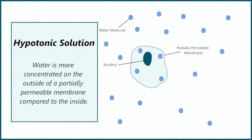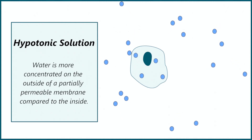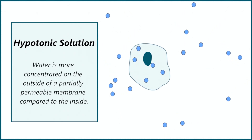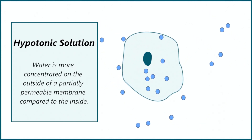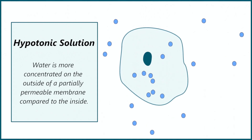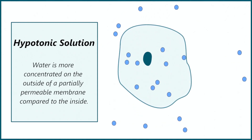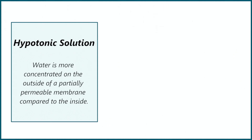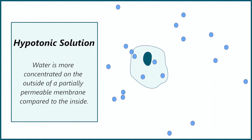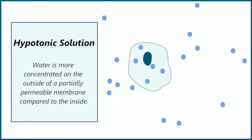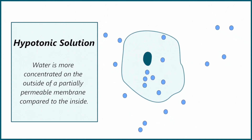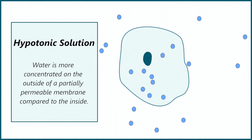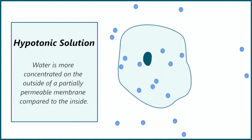For this cell the water is more concentrated on the outside of the cell compared to the inside. This means water moves from a higher concentration outside to a lower concentration inside by osmosis across the partially permeable membrane. This causes the cell to swell up and expand. Eventually the cell will burst if too much water gets in — we call this cell lysis. When water is more concentrated on the outside of the cell it is known as a hypotonic solution.